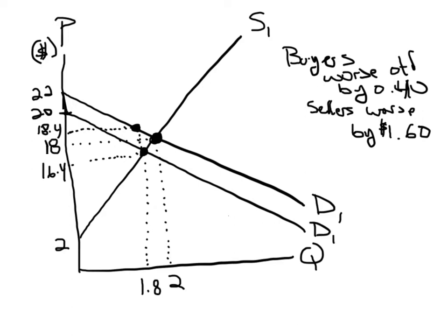Now let's put the tax on the sellers. So the tax is going to shift the supply curve to the left by exactly $2. So everywhere it's going to be $2 and the intercept is $2, but the equilibrium price ends up being $18.40. Now how worse off are buyers? Well, buyers are worse off by $0.40, because before the tax on sellers they were paying $18, and now they're paying $18.40.